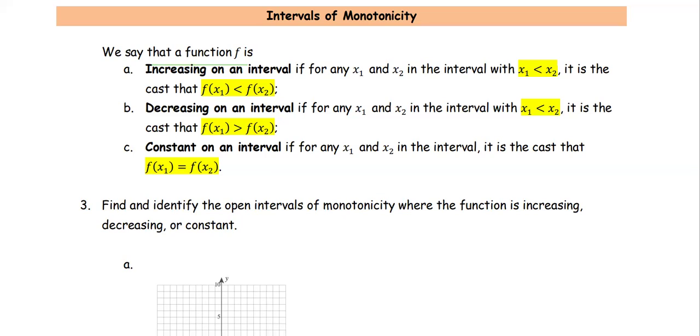Intervals of monotonicity. We say that the function f is increasing if for x1 less than x2, the function at x1 is less than f of x2. The function f is decreasing on the interval if x1 less than x2, then f of x1 is greater than f of x2. We say the function f is constant on the interval if for any x1 and x2, the function values are the same.